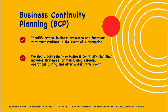For business continuity planning, identify critical business processes and functions that must continue in the event of disruptions. Develop a comprehensive business continuity plan that includes strategies for maintaining essential operations during and after disruptive events. Conduct a business impact analysis — identify and prioritize critical business functions dependent on information assets, determine critical functions, assess impact, and develop mitigation plans. Ensure technology and infrastructure preparedness including redundancy, backup systems, and communication protocols.